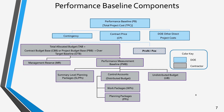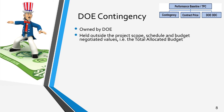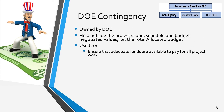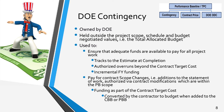This snippet does not focus on the components of the PMB, but the TAB is the level at which budget is managed by the contractor. We will start with an explanation of contingency, which is a cost reserve owned by the customer — in this case, the DOE. It is held outside the project scope, schedule, and budget that have already been provided to the contractor. On the Performance Baseline Components Chart, recall that contingency was shown above the total allocated budget. The contingency is the source for additional funding.